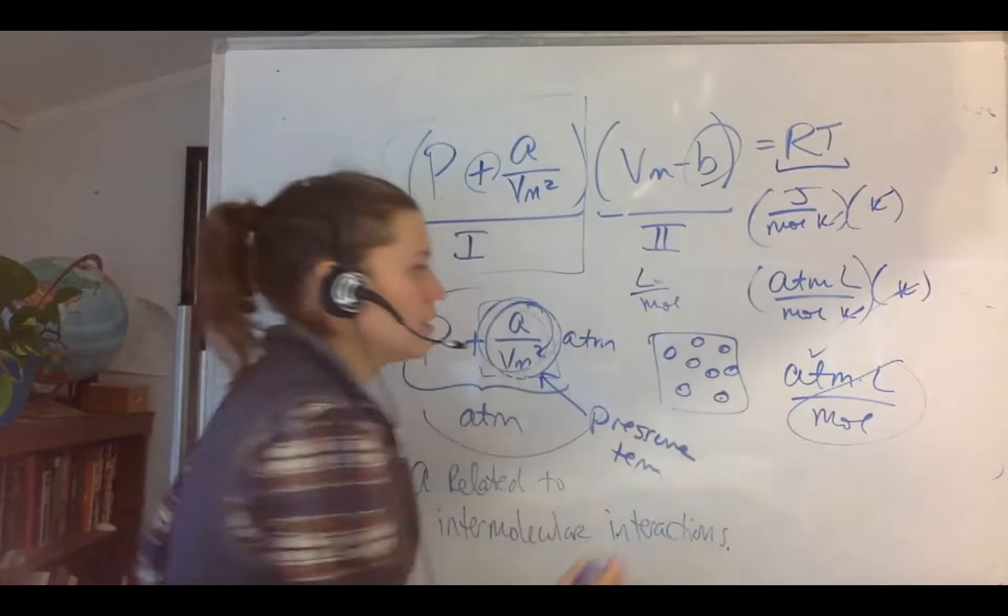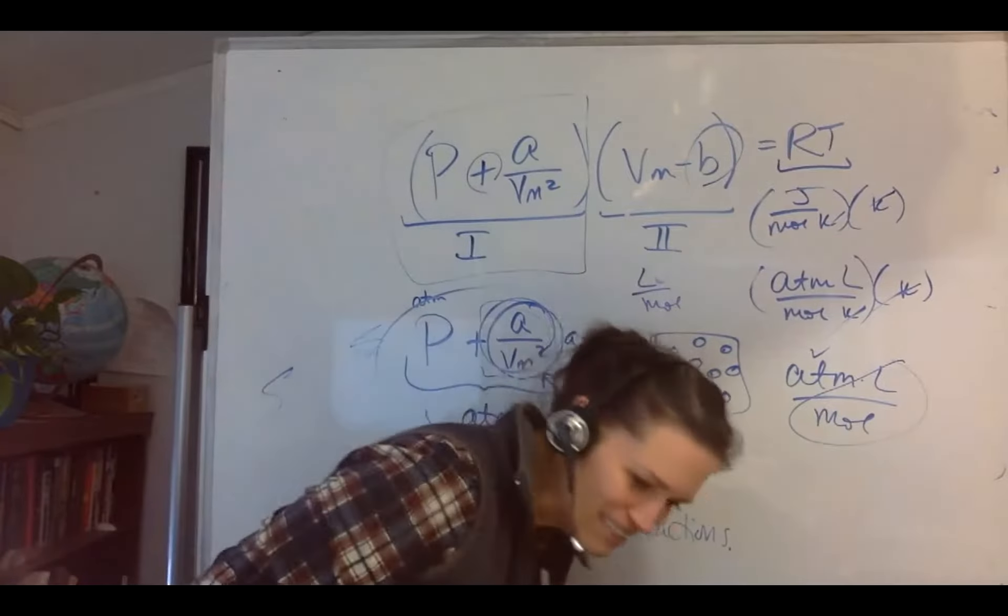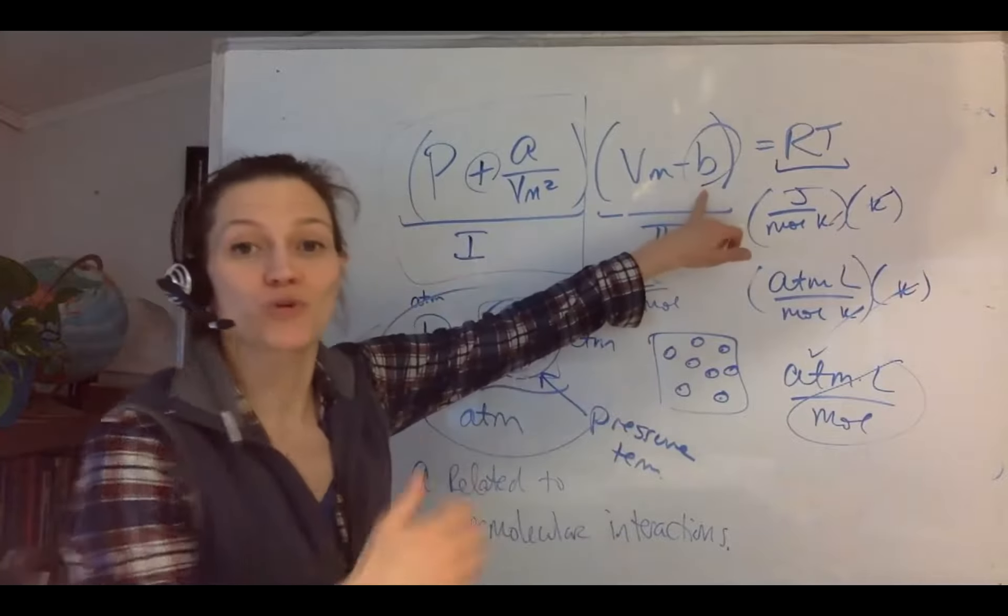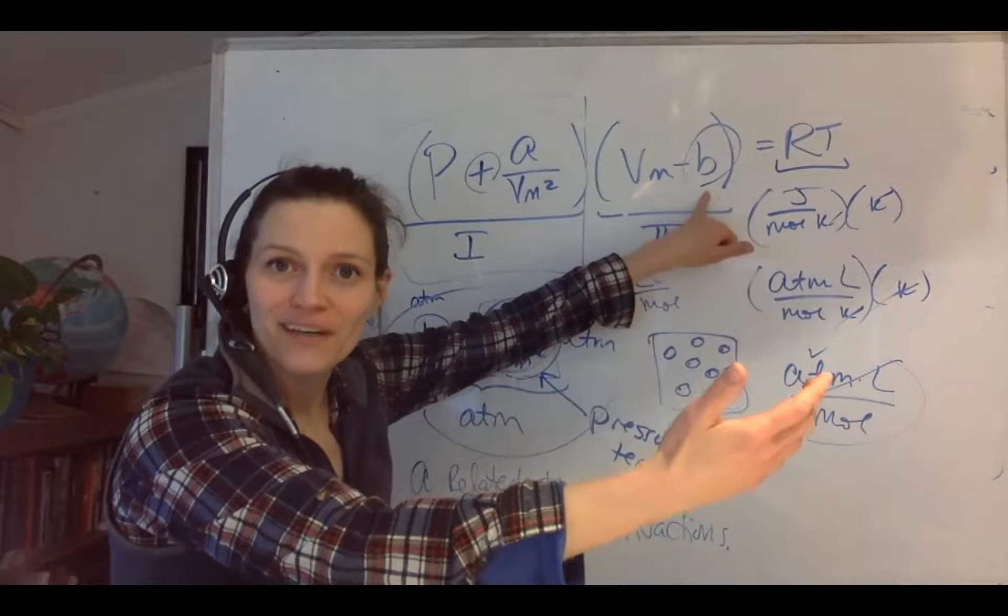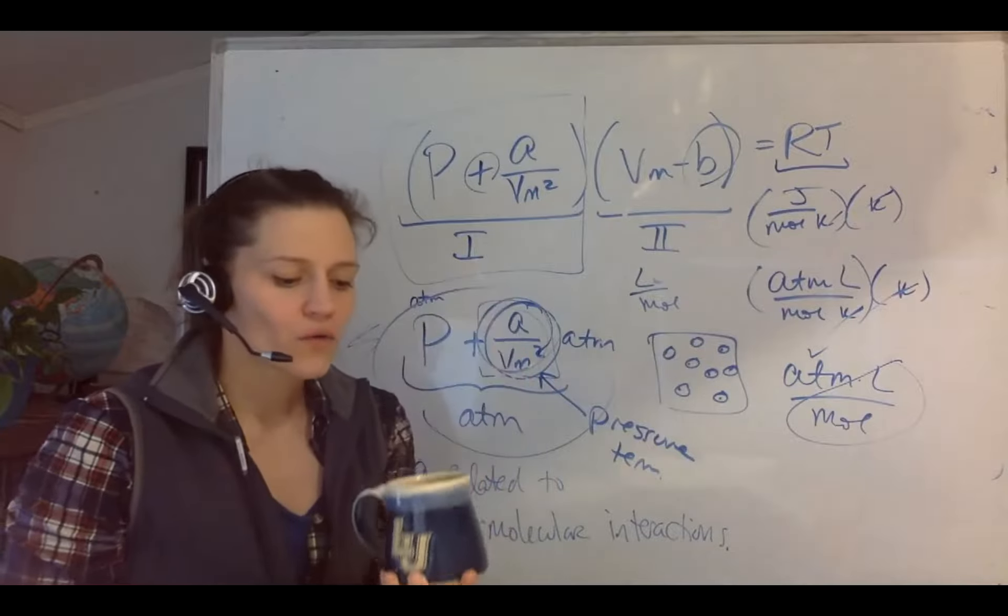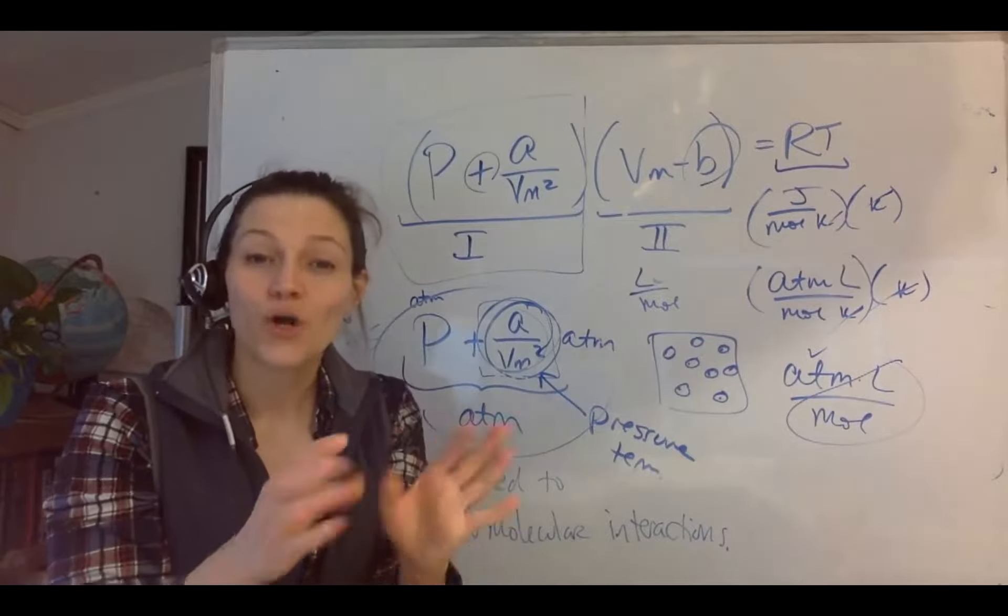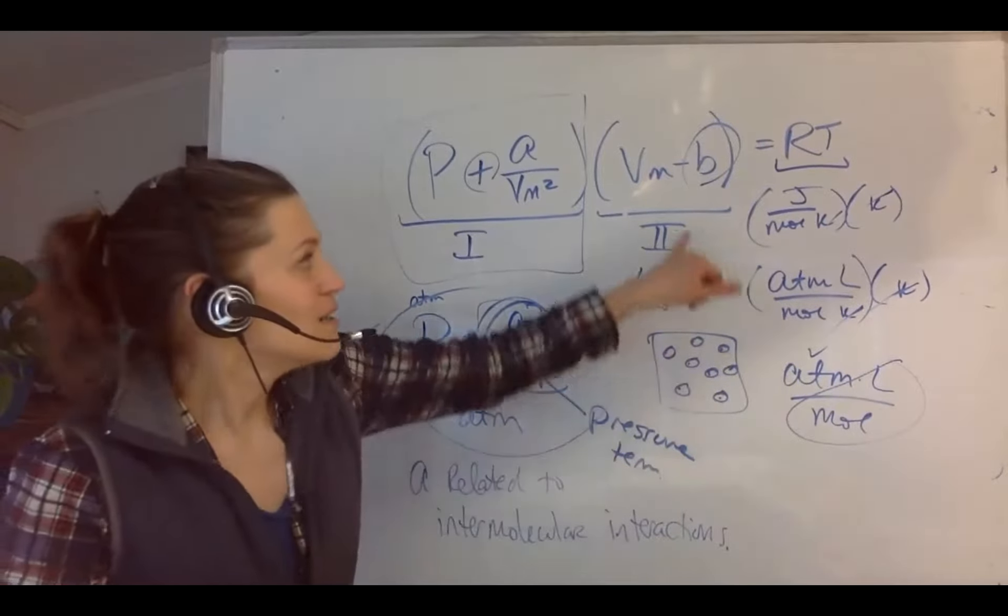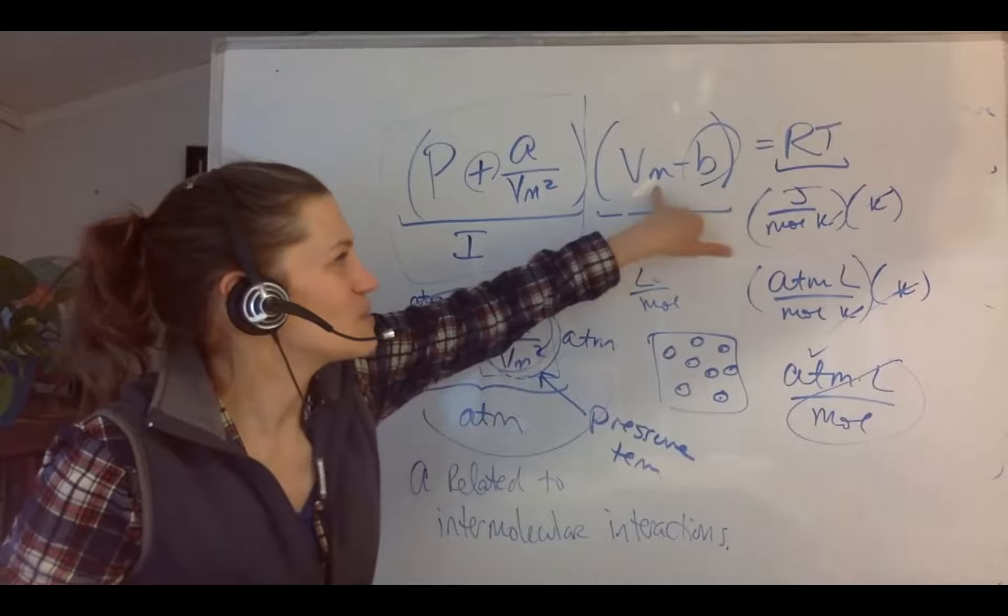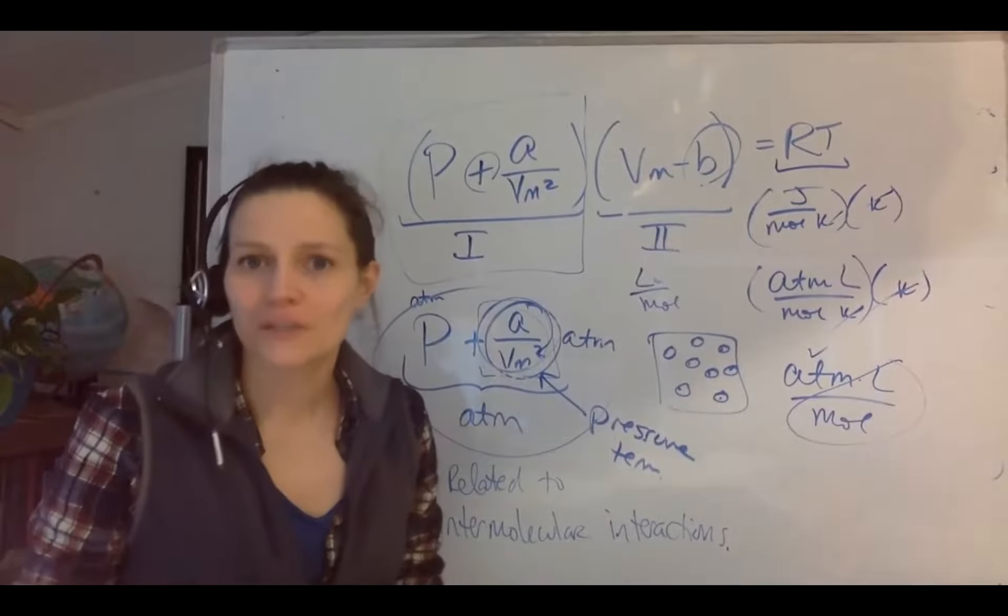V sub m minus b, what unit does b have to be? If you're going to subtract, it has to be molar volume. What could then be representative of a molar volume? If this is my system and it's a bunch of gas particles, and all of a sudden those gas particles have physical dimension, then those physical dimensions, if the point particles now have a volume, we have to subtract that off from the molar volume.